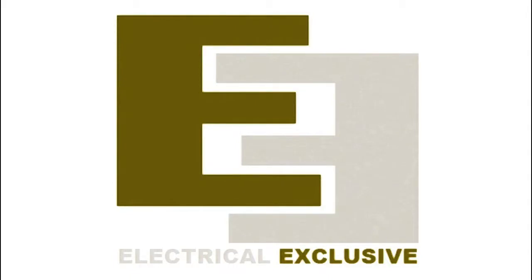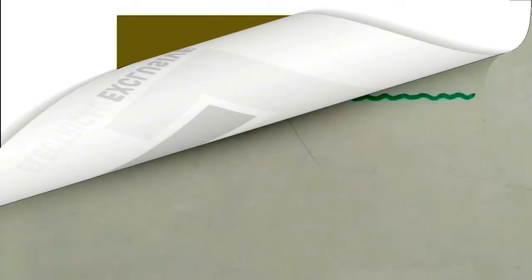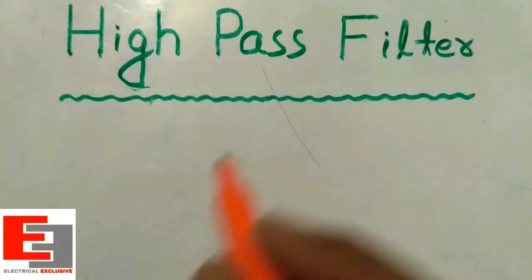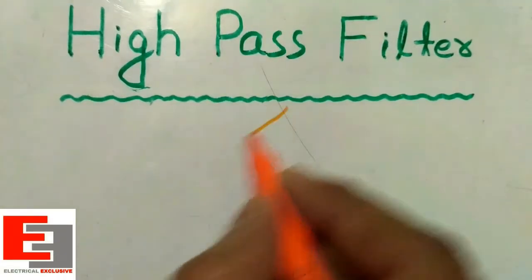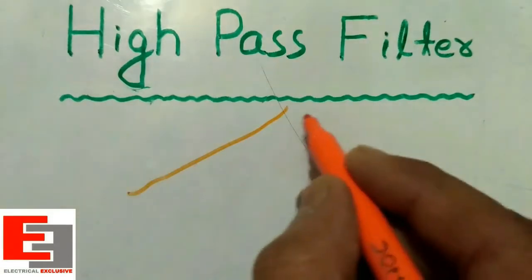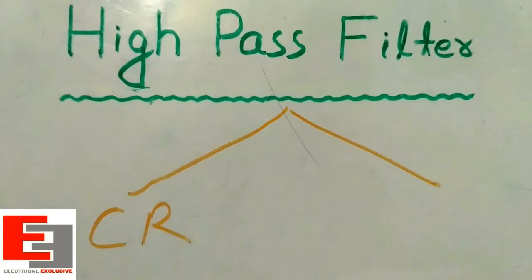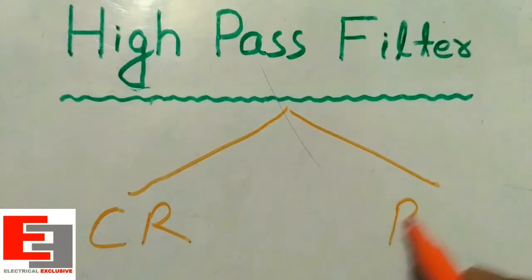Hello friends, Electrical Exclusive welcomes you. In this tutorial we shall discuss about high pass filters. High pass filters are classified into two types: the first type is CR high pass filter and the second type is RL high pass filter.